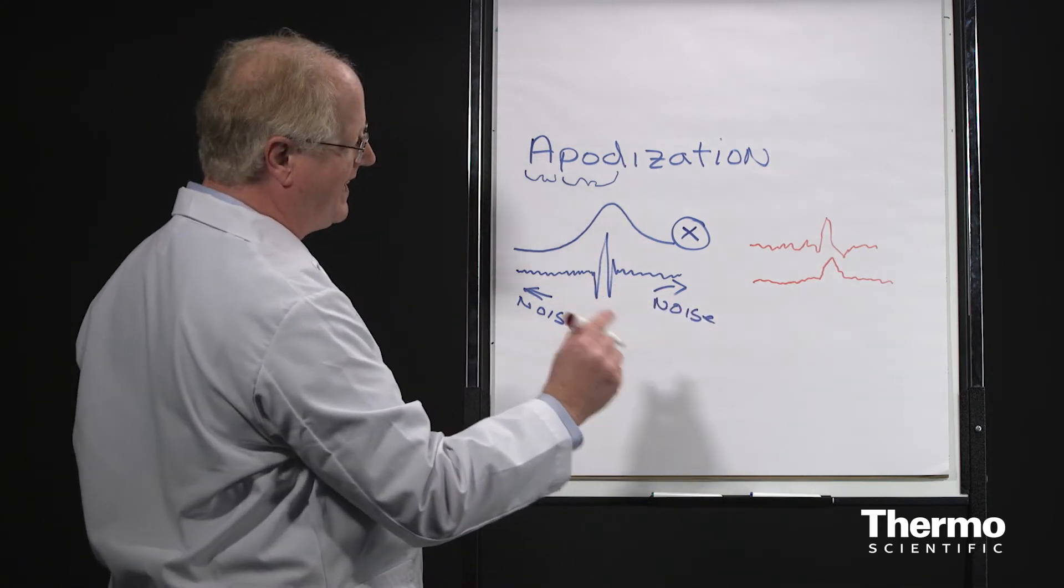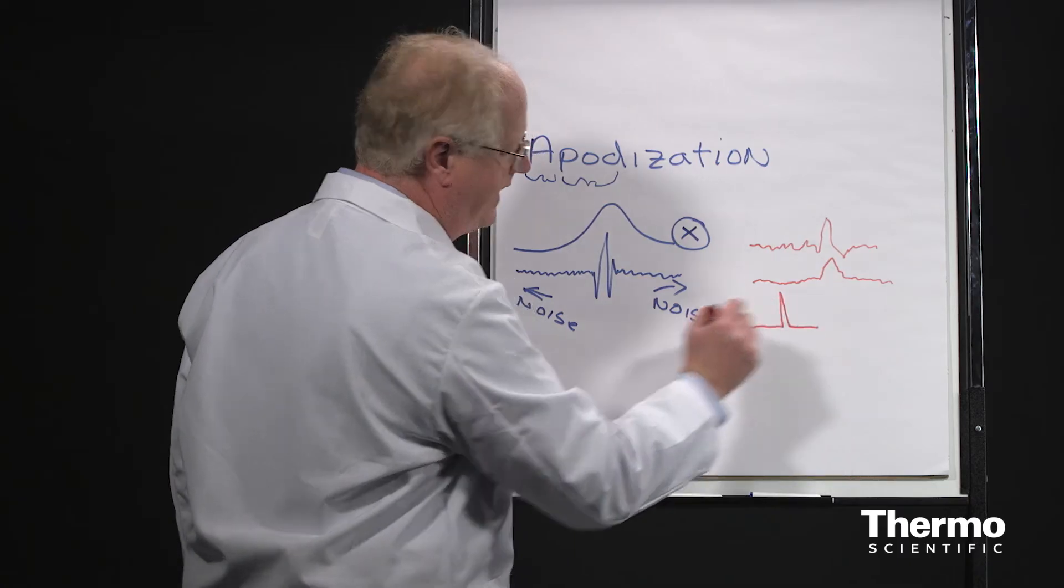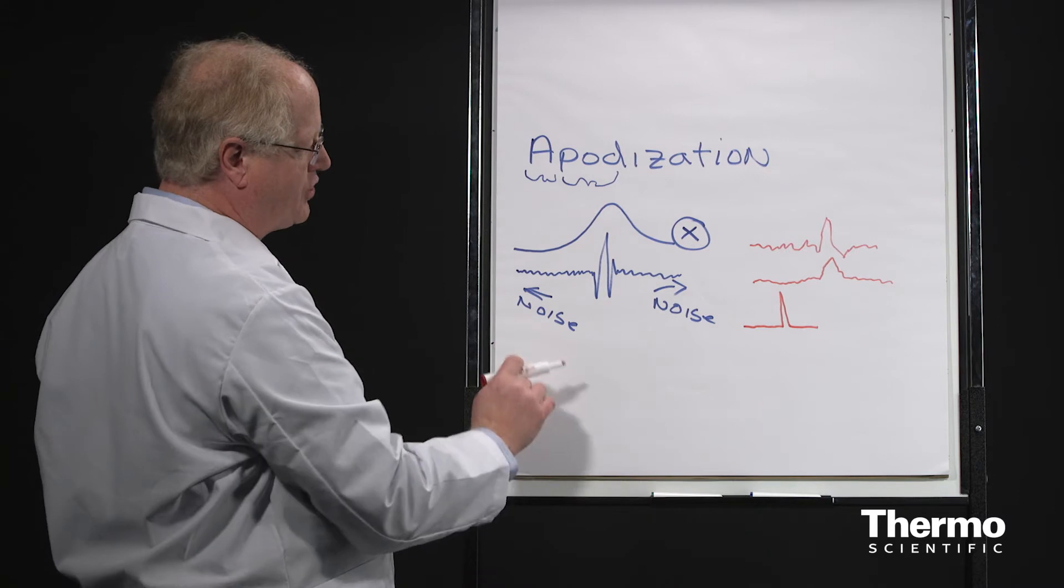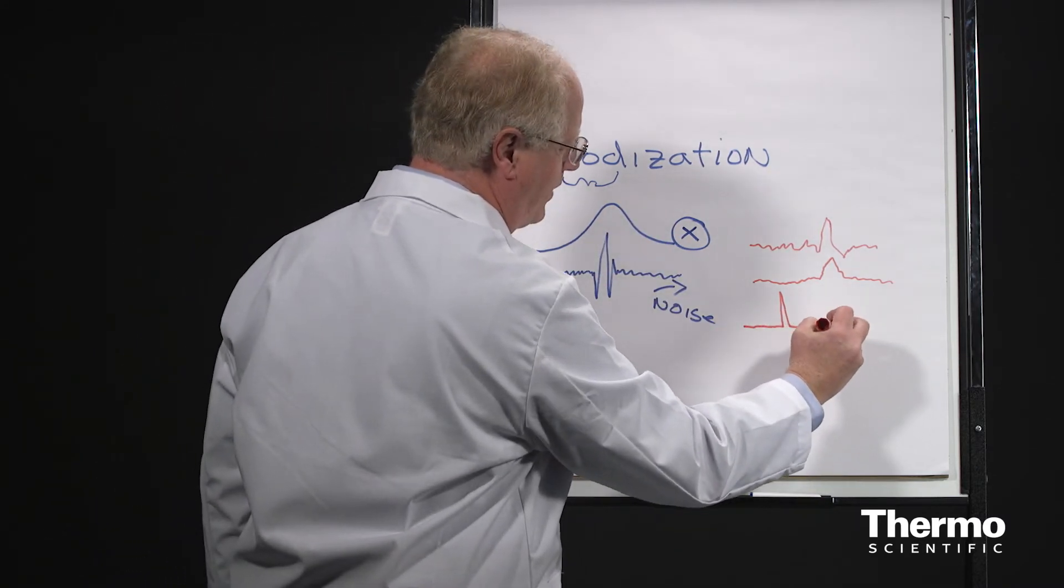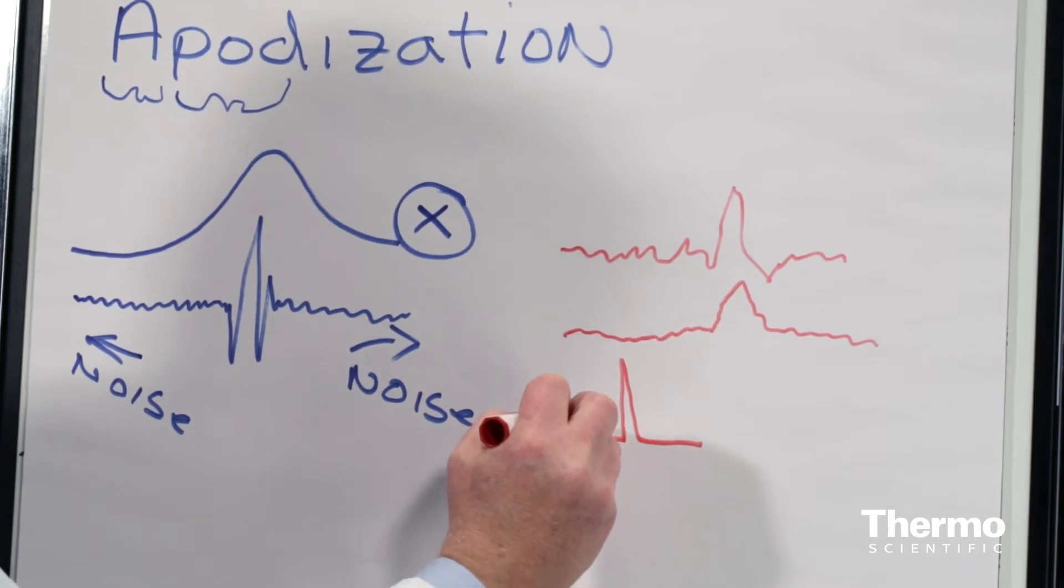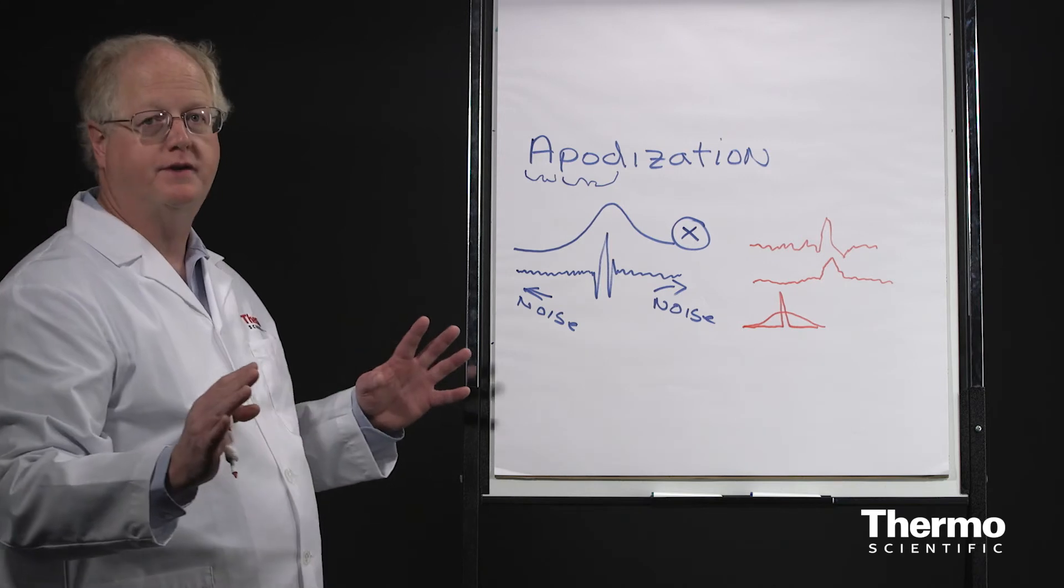We will run a gas phase spectrum where the peaks are very narrow. And if you apply a strong apodization function to a narrow peak like this, what happens is the peak looks like it's been run over. It flattens out and it actually broadens.